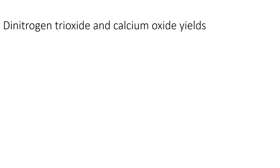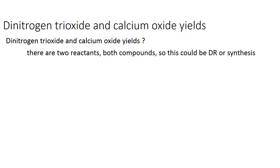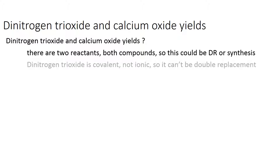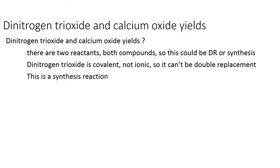Dinitrogen trioxide and calcium oxide yields what? There are two reactants, both are compounds, so this could be a double replacement or a synthesis. But dinitrogen trioxide is covalent, not ionic, so there are no ions to swap around. So it can't be double replacement — it must be a synthesis reaction.